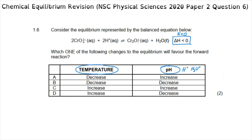By Le Chatelier's principle, to favor the forward exothermic reaction, we must decrease the temperature — the system will try to counter that by heating itself up, favoring the exothermic forward direction. This narrows the temperature options to A or B. For pH, hydrogen ions are present on the left-hand side as reactants, so to favor the forward reaction we want to increase the hydrogen ion concentration.